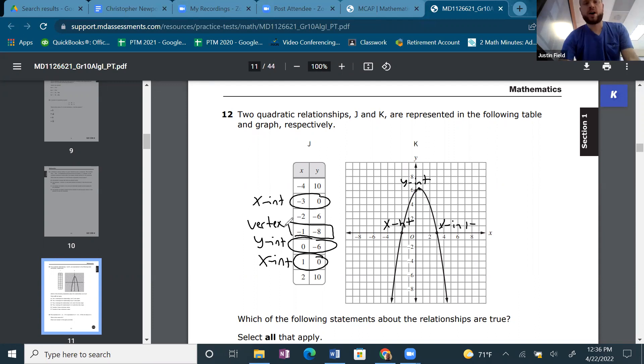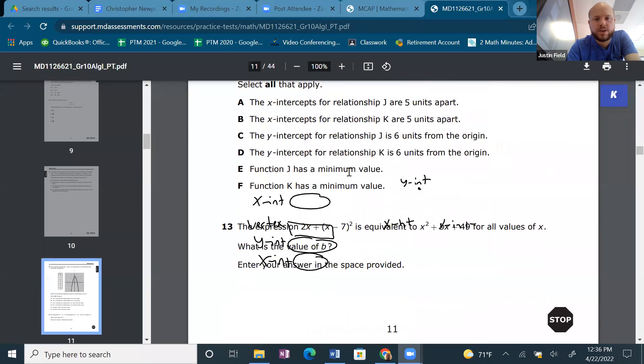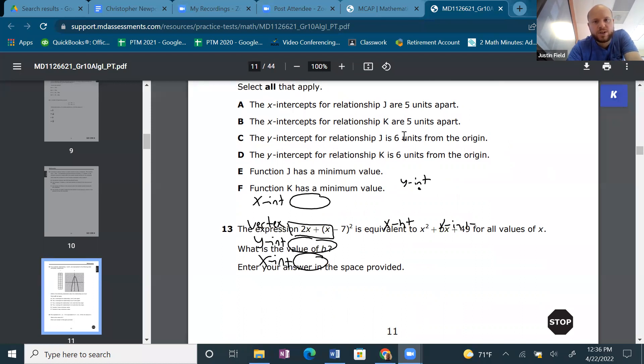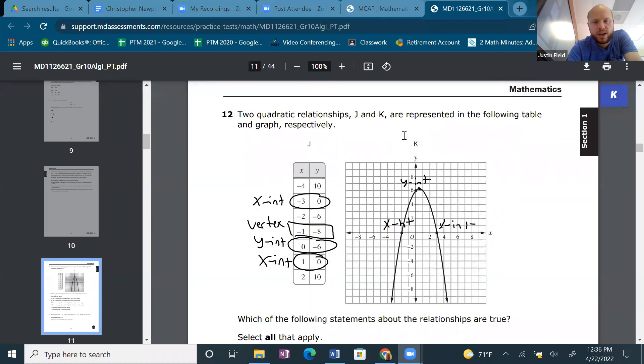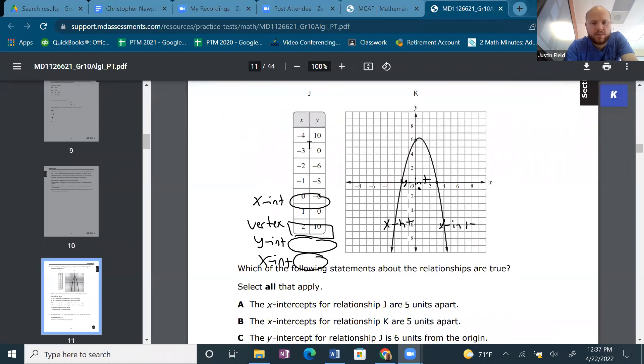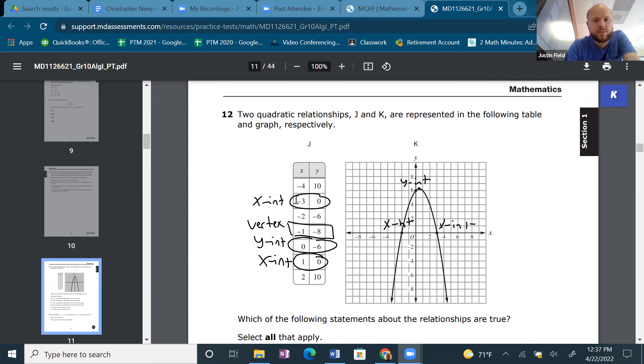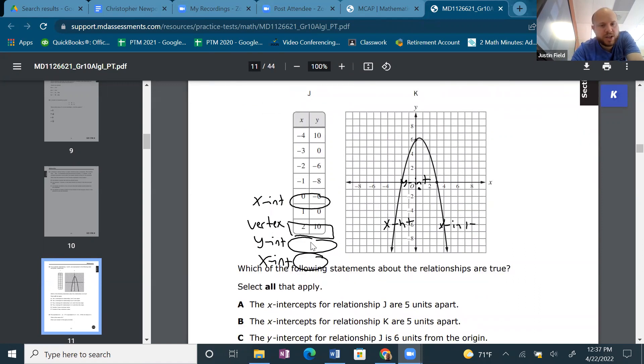So now I've found all the key components of both quadratics. But what do we want to know? The y-intercepts. The x-intercepts for the relationship J are 5 units apart. Okay. J. The x-intercepts are 5 units apart. So from -3 to 1 is not 5 units. -3 to 1 is 4.